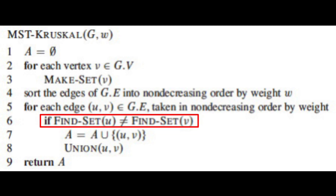For that, find-set of u will return the set to which vertex u belongs, and find-set of v will return the set to which vertex v belongs. If both the sets are the same, it means that u and v belong to the same tree or that they are already connected. Now if u and v are already connected, adding an edge u v will result in a cycle.